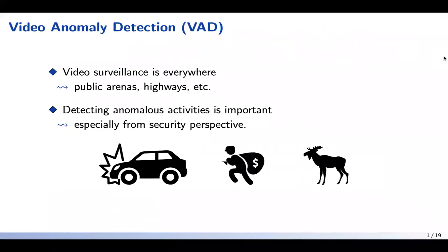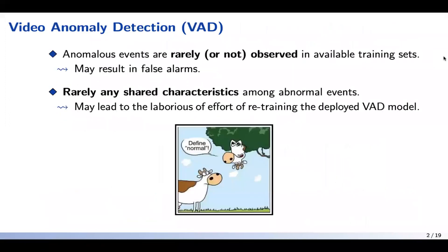Video surveillance is everywhere, be it public arenas or highways. Detecting anomalous activities is hence highly important, especially from a security perspective. Anomalous events are rarely observed or have any shared characteristics for training a good model.